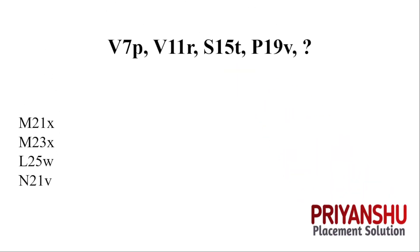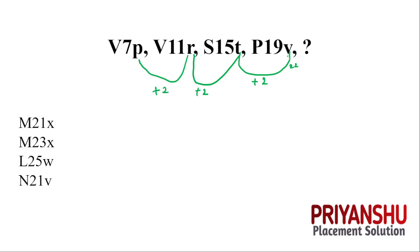The next question involves the series V P V R S T P V. We can see V to T: V is 22, T is 20, so plus 2 difference. T to R: 20 to 18, again plus 2. R to P: again plus 2. So the pattern is plus 2 difference, meaning the next term will also be plus 2, giving us X.